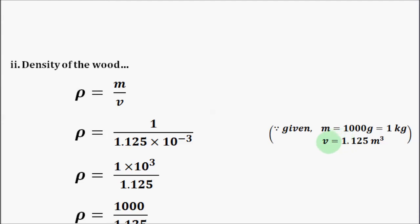The volume is 1.125 m³. Here the mass value is 1 kg and the volume value is 1.125 × 10⁻³. When 10 is raised to power minus 3, it becomes positive. So we have 1 × 10³ divided by 1.125.